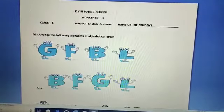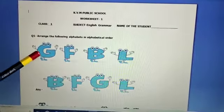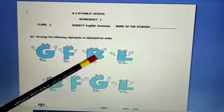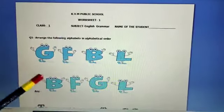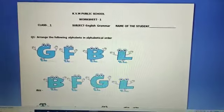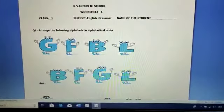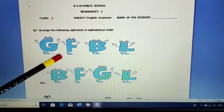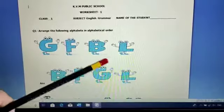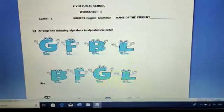Now let's see the screen. The first question given to you was the alphabets G, F, B and L and you have to arrange them in alphabetical order. Now go through the ABC sequence, read the alphabet A to Z. You will see that B comes first, F comes second, G comes after that and L at the end.